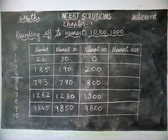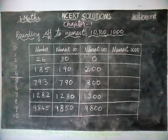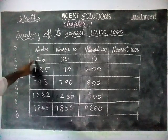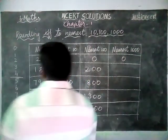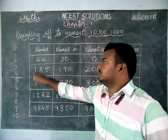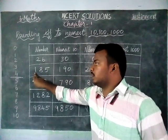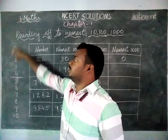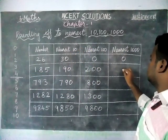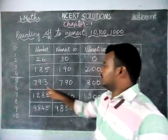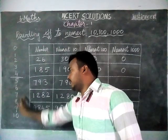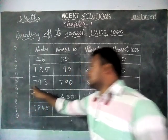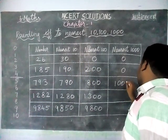Next, we are going to check for nearest 1000. Listen carefully. For nearest 1000, we have to check the hundreds place. For the number 26, there is no hundreds place, so it is 0. For 185, the hundreds place is 1. Since 1 falls in the 1–4 range, we choose the previous 1000, which is 0. For 793, the hundreds place is 7, which is in the 5–9 range, so we choose the next 1000, which is 1000.